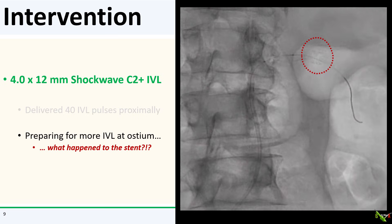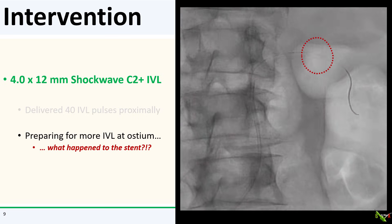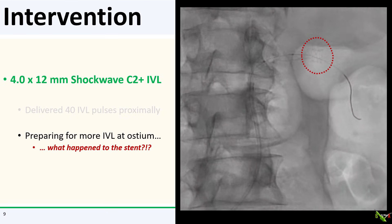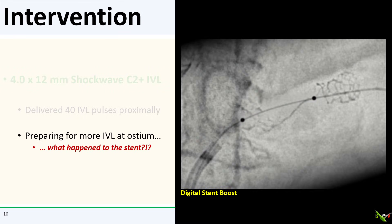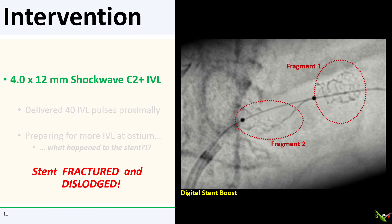The shockwave IVL balloon looked to be in a good spot, but look at the stent distally — it looks a little funny. It seems a little short and a little bit more distal than where it was deployed. What happened? It seems that the 5.0 by 12-millimeter stent fractured during shockwave intravascular lithotripsy, and the distal stent fragment became dislodged and partially embolized down the renal artery.